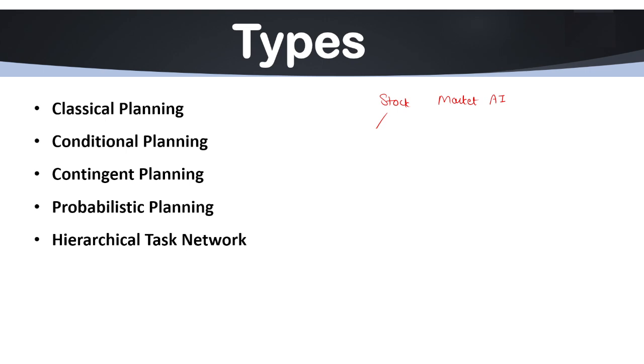Next type we have is hierarchical task network, that is HTN planning. HTN planning basically breaks a complex task into smaller subtasks. Each subtask is planned and executed independently. For example, robot making coffee. Here the main task is making coffee. The subtasks include boil water, add coffee powder, pour milk and sugar, serve the coffee. All these are subtasks. The complex task is making the coffee. The robot completes each subtask before moving to the next.